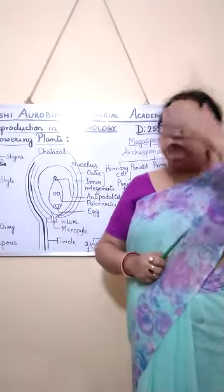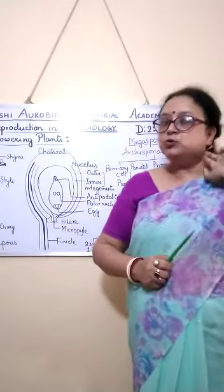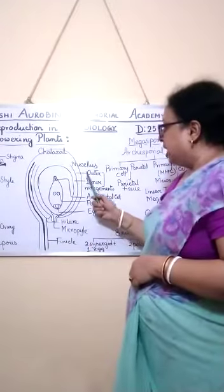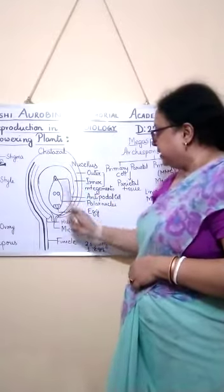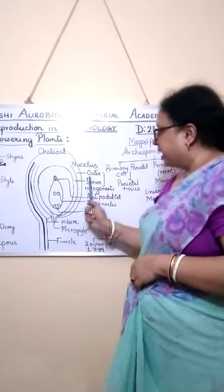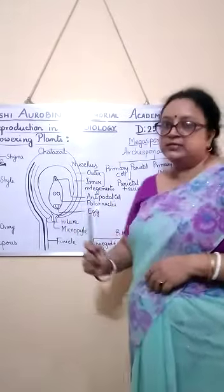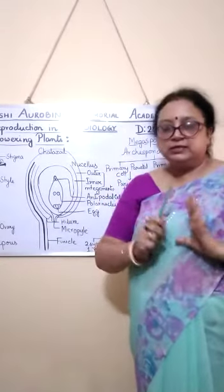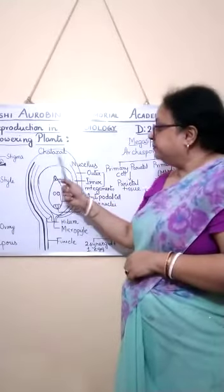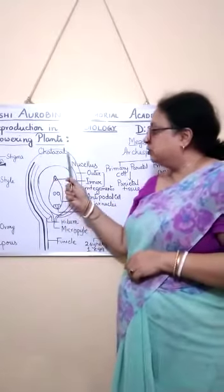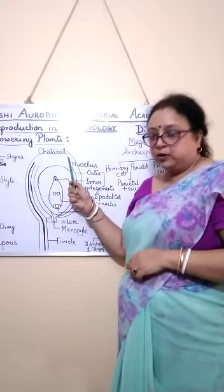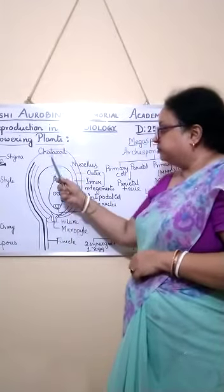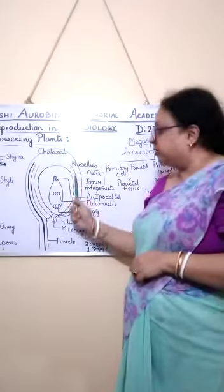This ovule is covered by two membranes, or two coverings: the outer integument and inner integument. These are the two coverings through which the nucellus is covered up. The basal part of this ovule is known as the chalaza, and from this chalazal region the integuments arise.